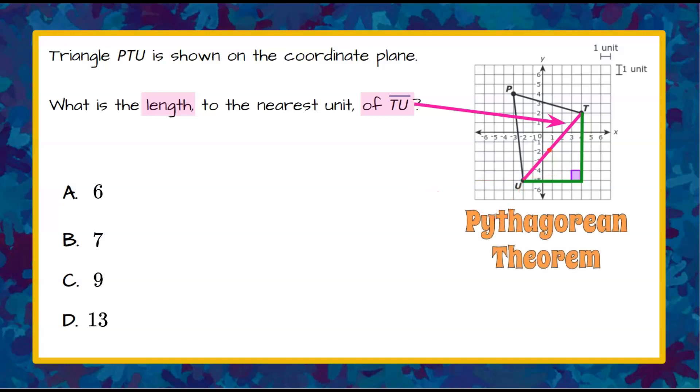Pythagorean Theorem applies to any right triangle to find the length of a missing side. Pythagorean Theorem is A squared plus B squared equals C squared, where A and B form the legs of the triangle that form the right angle.